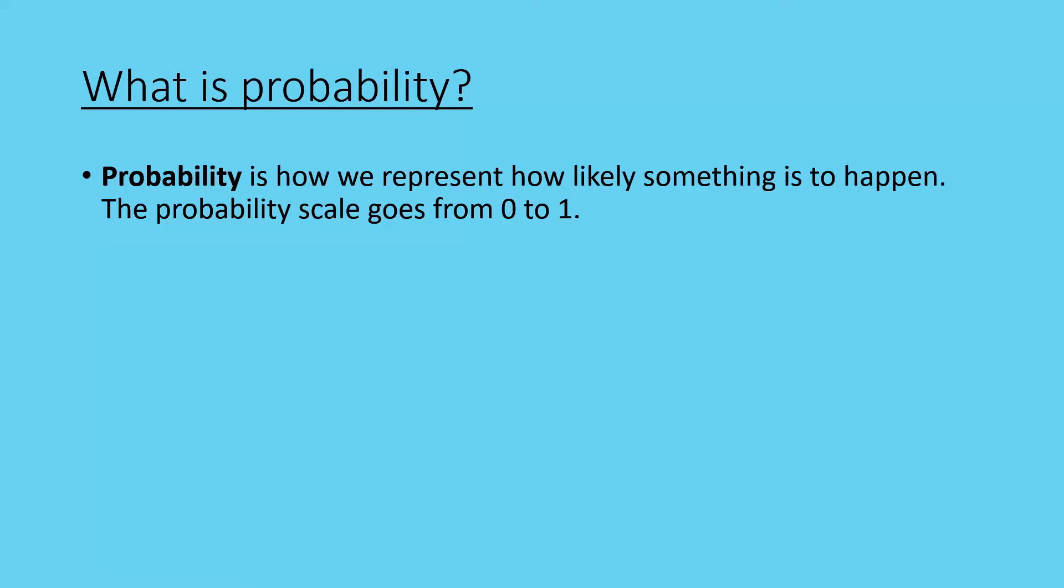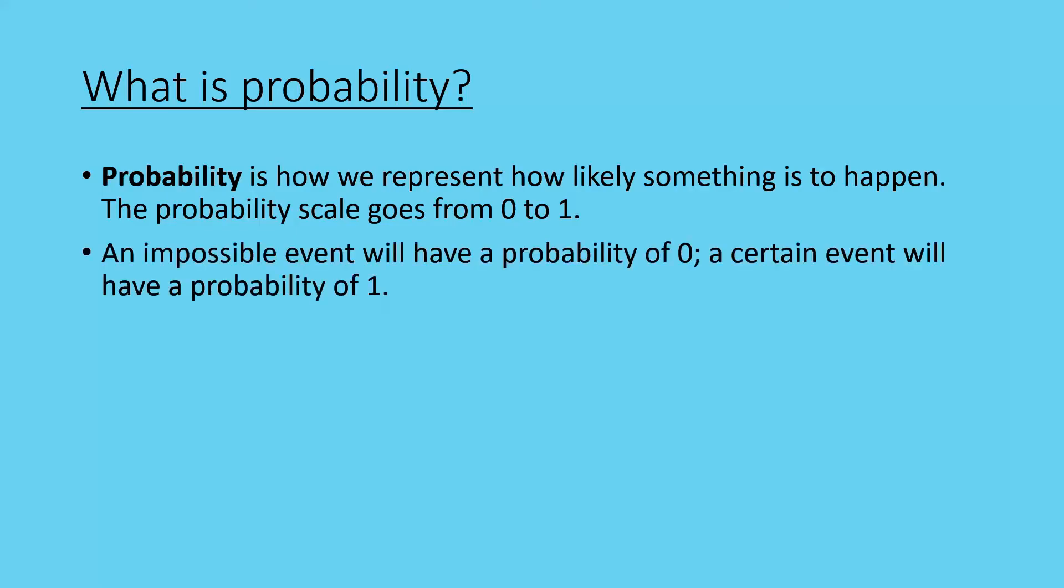Well, probability is how we represent how likely something is to happen. The probability scale goes from 0 to 1. An impossible event will have a probability of 0. A certain event will have a probability of 1. Think of it as 0% up to 100%.